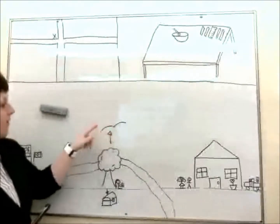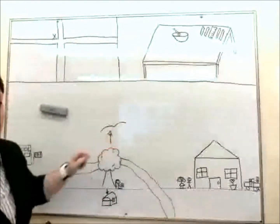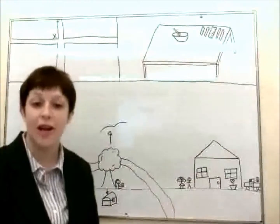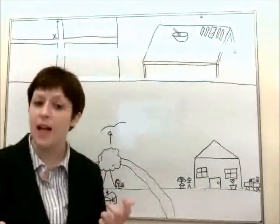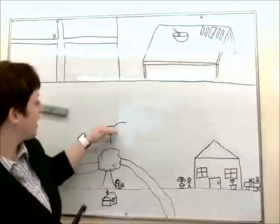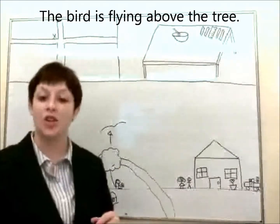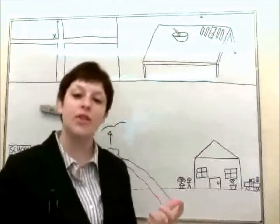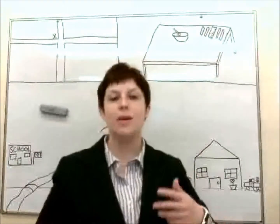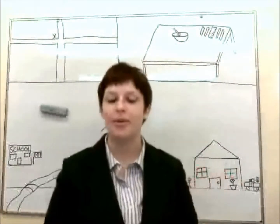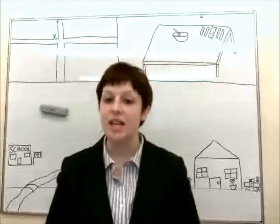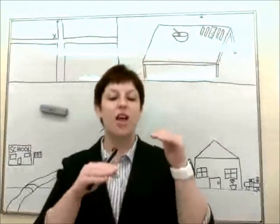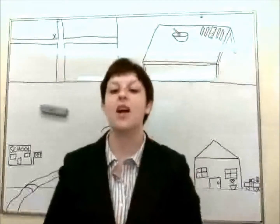And if we look up here, there is a bird. What is the bird doing? The bird is flying. But where is the bird flying? The bird is flying above the tree. So if you think about your kitchen — in a lot of kitchens, if you're washing your dishes in the sink, you have cabinets above it. So you could say the cabinets are above the sink.